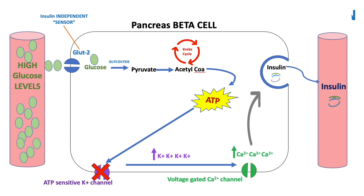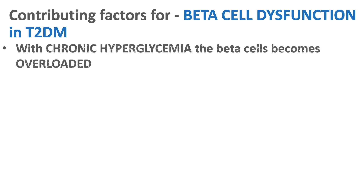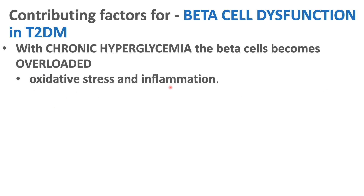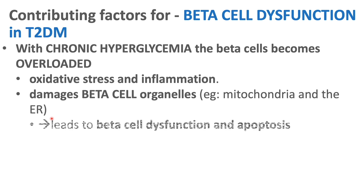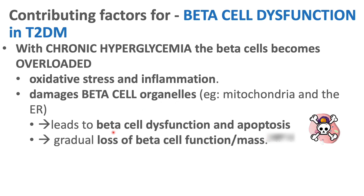Over time, with chronic hyperglycemia, this causes the beta cells to become overloaded, making it difficult for the pancreas to keep up with the high blood glucose levels. This leads to oxidative stress and inflammation, damaging the beta cell — especially the organelles, being the mitochondria, which is the powerhouse of the cell, and also the ER, or endoplasmic reticulum. The ER plays a key role in insulin synthesis. This leads to beta cell dysfunction and apoptosis, or cell death, and eventually a gradual loss of beta cell function and mass.